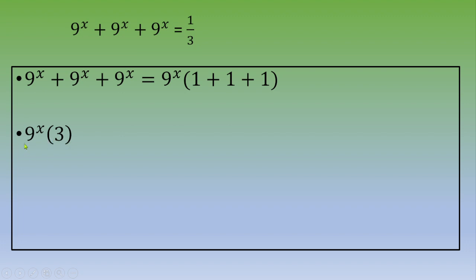Now we modify this 9. Instead of 9^x times 3, we can write (3^2)^x times 3. Thanks to the formula a^n^m = a^(n×m).